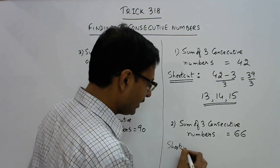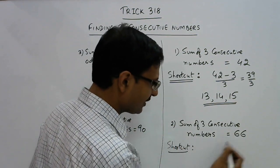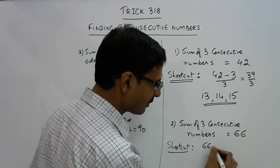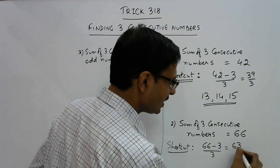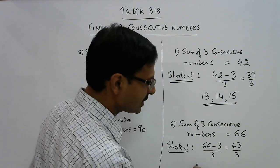We have the same shortcut to be applied here. The sum of the numbers is given as 66. So subtract 3 and divide by 3. 66 minus 3 is 63 divided by 3, so you get the first number is 21.